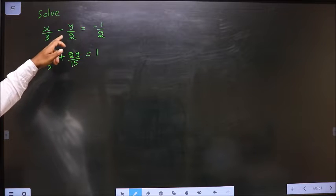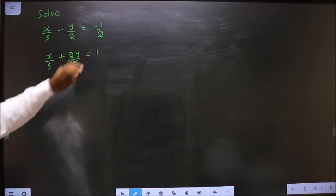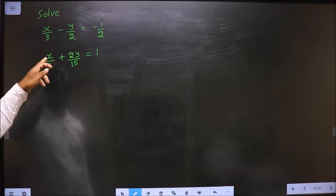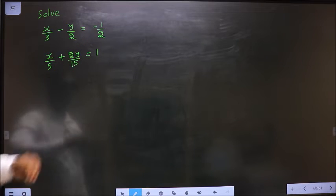Solve x by 3 minus y by 2 equal to minus 1 by 2 and x by 5 plus 2y by 15 equal to 1.